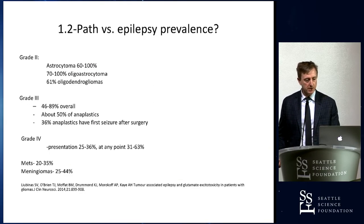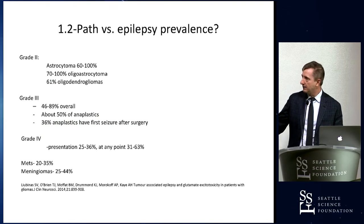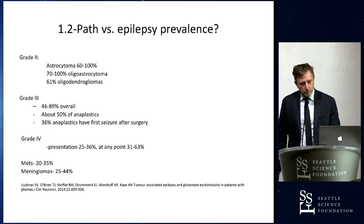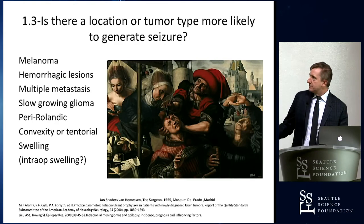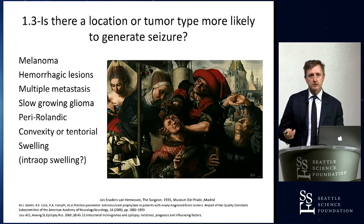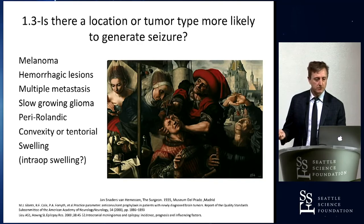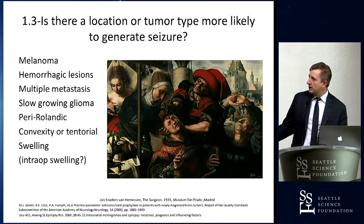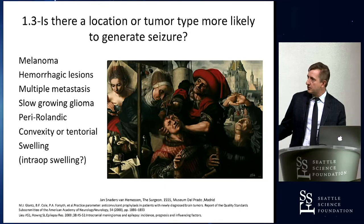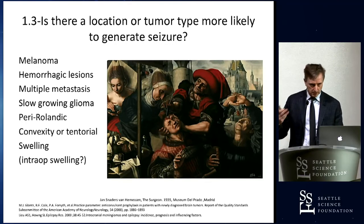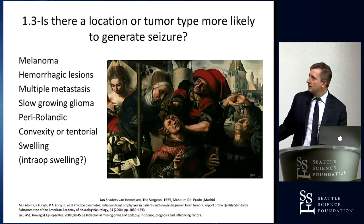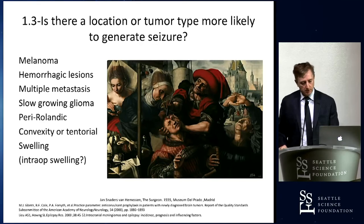Path versus epilepsy prevalence — these aren't betting numbers, they're all over the place. For me, location is far more interesting than the actual pathology. Locations more likely to generate seizure: convexity or tentorial tumors, perirolandic tumors, tumors close to the hippocampus, tumors involving swelling. Melanoma, hemorrhagic lesions, and multiple metastatic disease tend to be harder to treat.